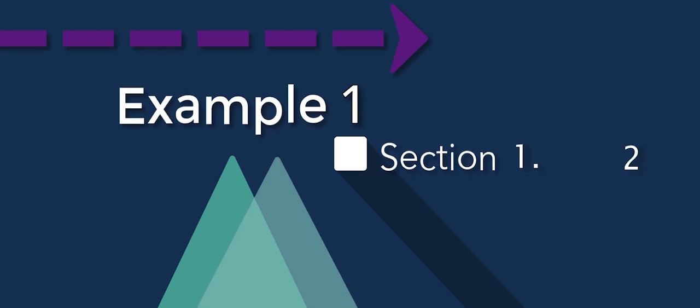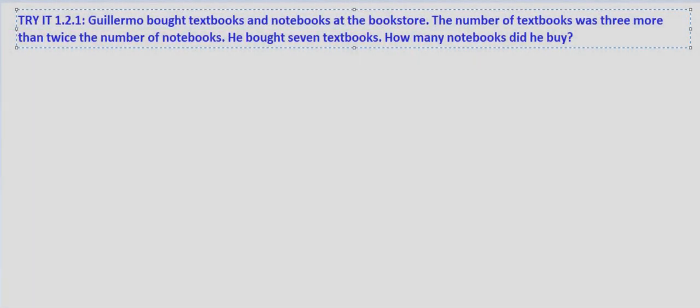In this problem we are told that Guillermo bought textbooks and notebooks at the bookstore and that the number of textbooks was three more than twice the number of notebooks. He bought seven textbooks and we're asked to find how many notebooks he bought.